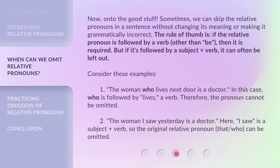Now, onto the good stuff. Sometimes we can skip the relative pronouns in a sentence without changing its meaning or making it grammatically incorrect. The rule of thumb is: if the relative pronoun is followed by a verb other than 'be,' then it is required. But if it's followed by a subject plus verb, it can often be left out.